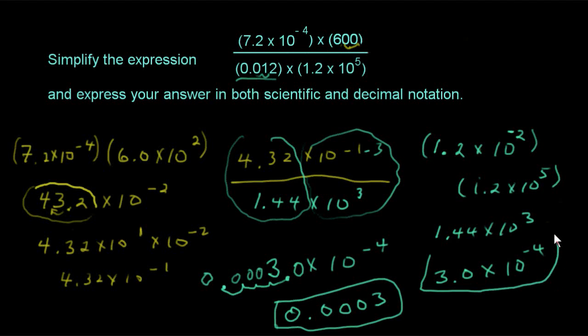To recap what we did, we put the numbers that were not in scientific notation into scientific notation. We multiplied the product that was in the numerator together, and we did the same thing. We multiplied the product in the denominator together, and then we divided. See ya!